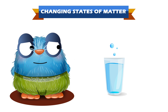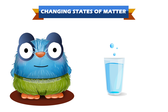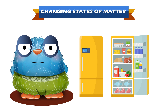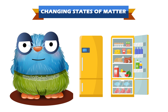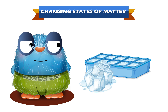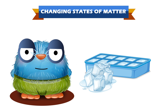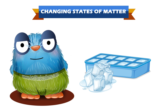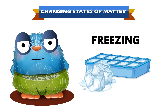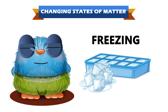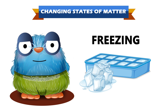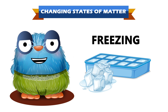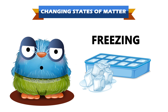Water exists in liquid form. When water is kept in the fridge to freeze, it turns into an ice cube. Now water has changed from liquid to solid state. This process is called freezing.